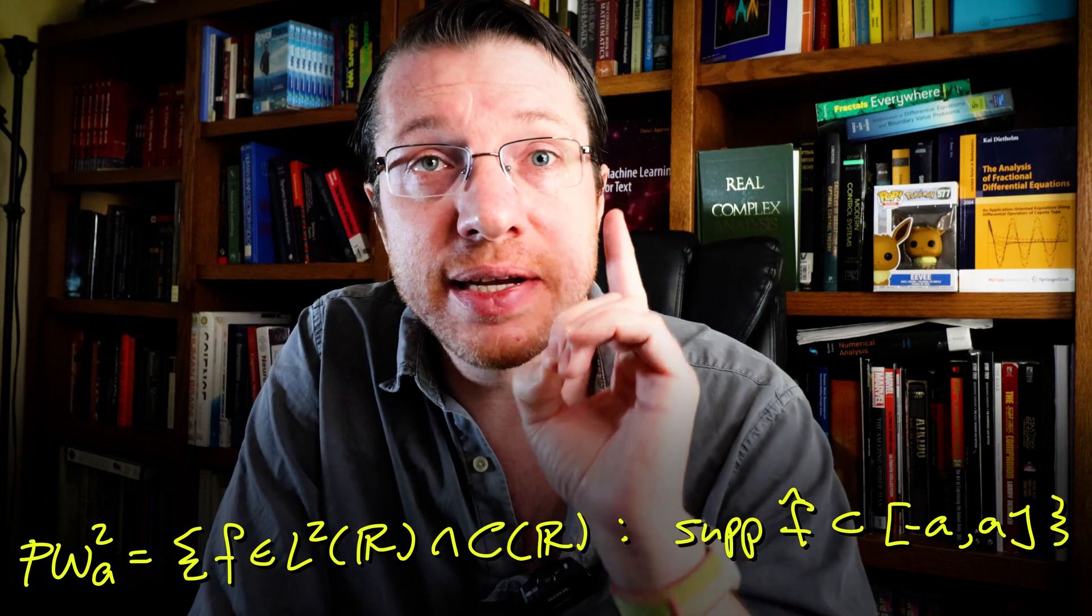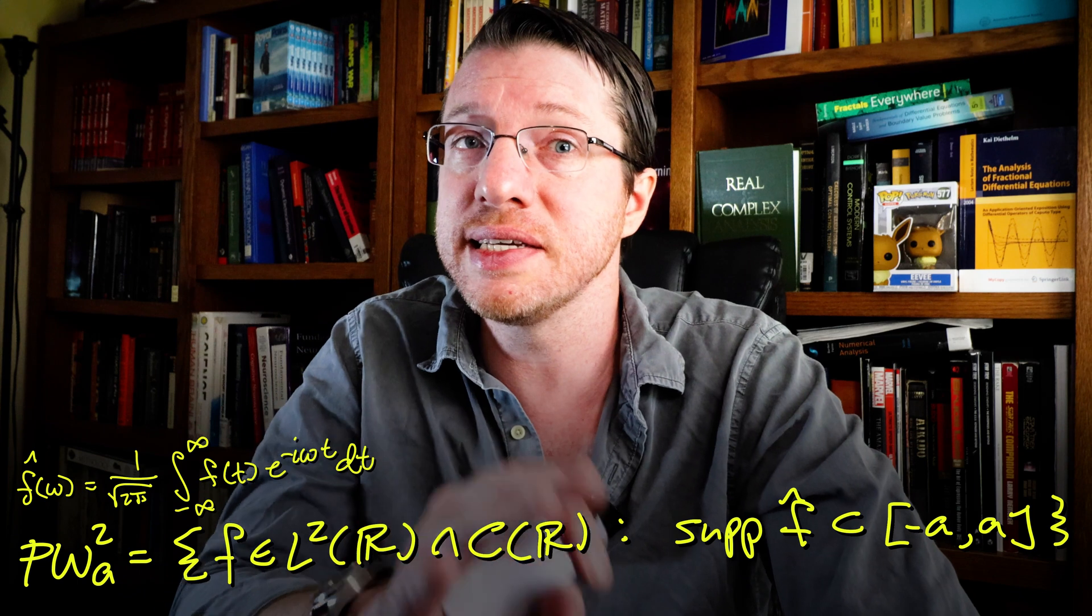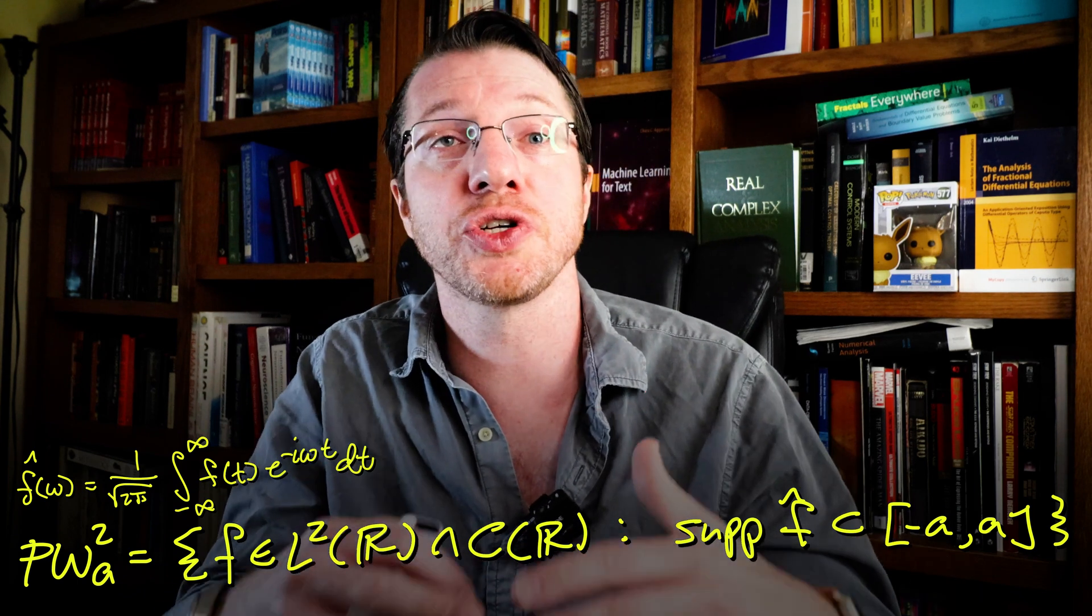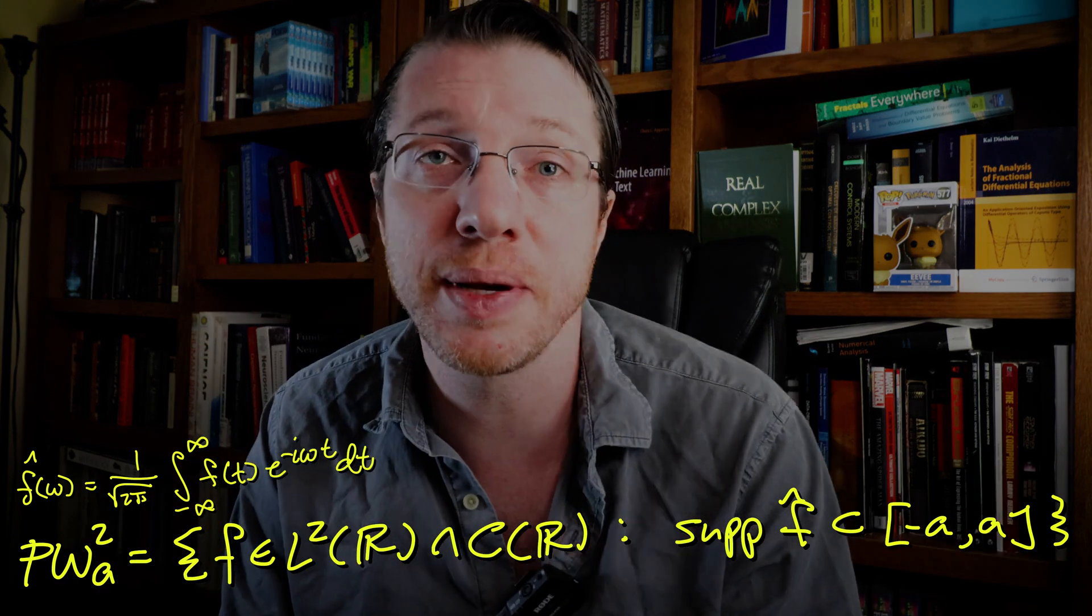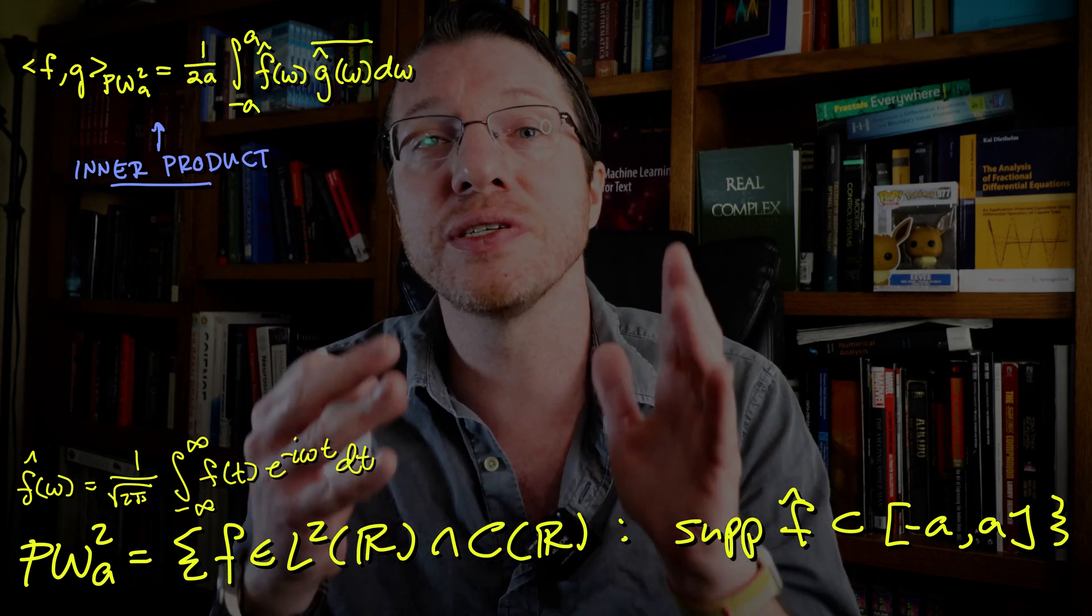The Paley-Wiener space with parameter A is precisely the space of continuous L2 signals where the Fourier transform of these functions is zero for frequencies with magnitude larger than A. As a Hilbert space, the Paley-Wiener space comes with an inner product that is defined on the function's Fourier transform.